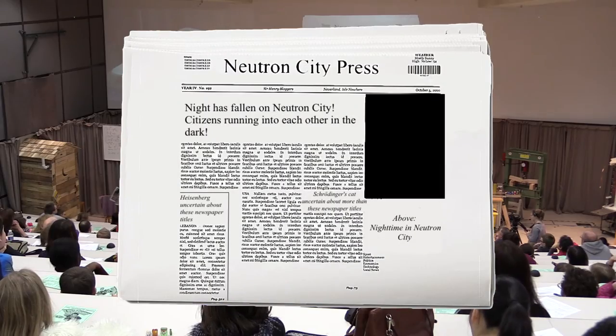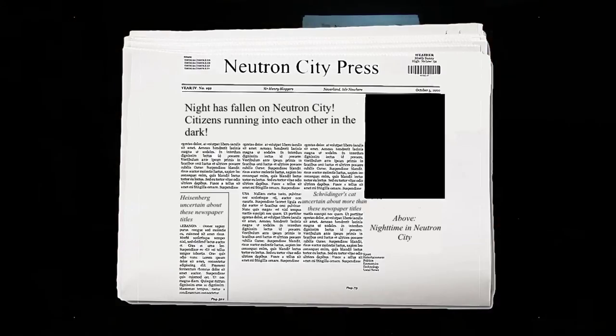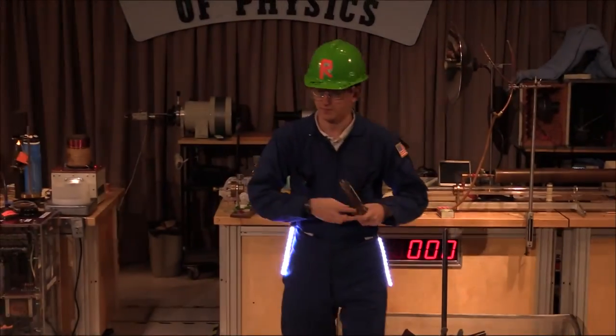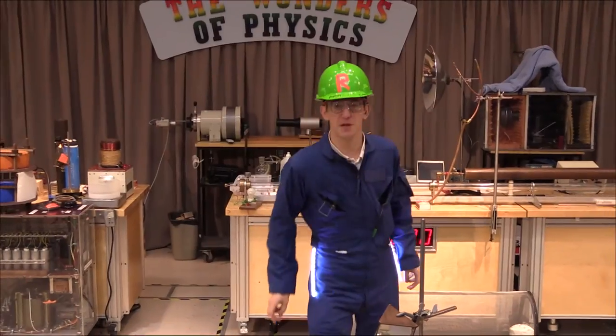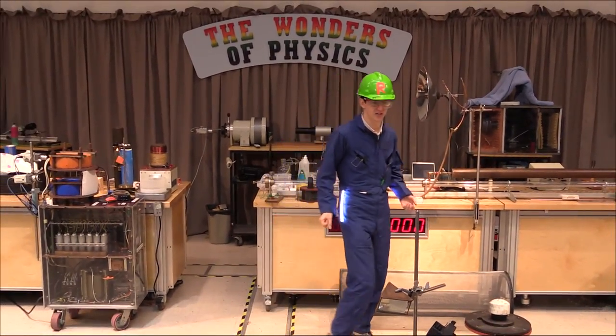Extra, extra, night has fallen on Neutron City. Citizens running into each other in the dark. We need someone to illuminate the city. I can't see anything. Where's my flashlight? Oh, no. I gave it to Raymond. Raymond, I need my flashlight. Don't tell them my alter ego. Pay no attention to him. My name is Rayman. And let me see if I can cast some light on the subject.